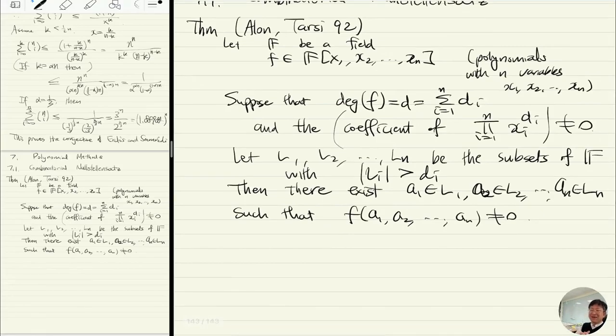This theorem or lemma is called the Combinatorial Nullstellensatz. There are many applications of this theorem. I'm going to show you the proof, and the proof is an easy induction on n.